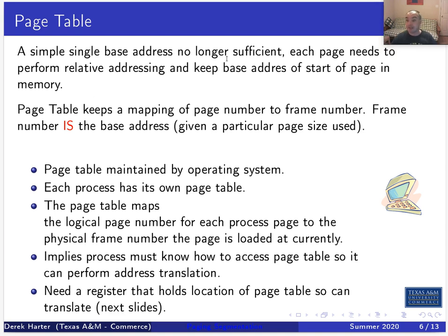The page table keeps a mapping of page numbers to the physical frame numbers that the page was loaded into. The frame number is effectively the base address - knowing which frame number a page is loaded into gives you the base address for relative addressing to translate from the page-relative address to the physical address. The page table is maintained by the operating system, with one page table per process.